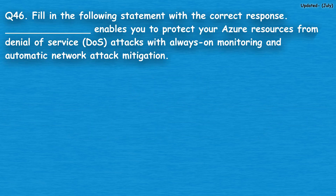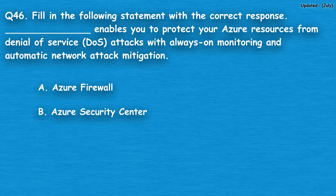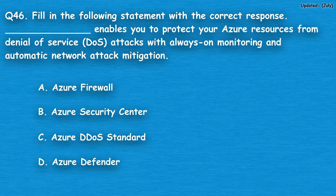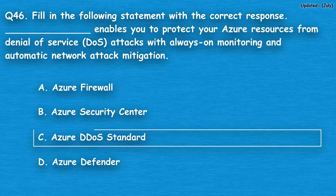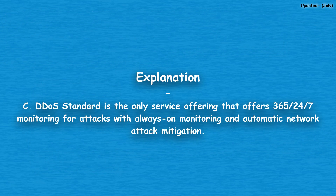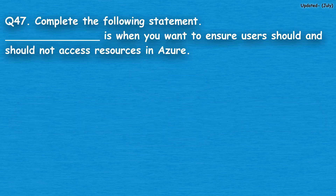Question number 46: Fill in the blank — dash enables you to protect your Azure resources from denial of service (DDoS) attacks with always-on monitoring and automatic network attack mitigation. Option A: Azure Firewall, option B: Azure Security Center, option C: Azure DDoS Standard, option D: Azure Defender. The correct answer is option C, Azure DDoS Standard. DDoS Standard is the only service offering that provides 365/24/7 monitoring with always-on monitoring and automatic network attack mitigation.